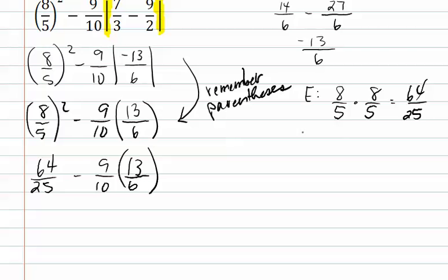Remember, when two things are placed next to each other without an operation between them, it means that they are being multiplied, which means we have nine-tenths times thirteen-sixths. We now must reduce this. Three goes into nine three times, three goes into six two times, and that is as far as this can reduce. So, we now do three times thirteen is thirty-nine, and ten times two is twenty, and we place this back in the problem.